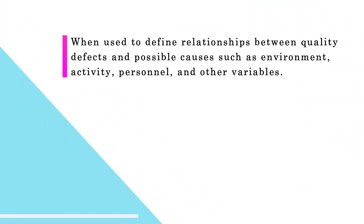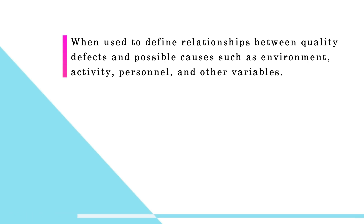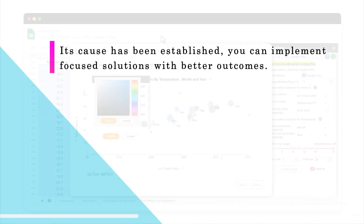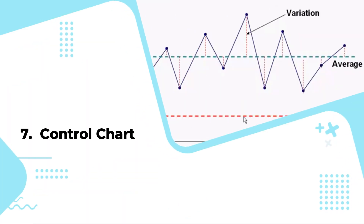Scatter diagrams can prove useful as a quality control tool when used to define relationships between quality defects and possible causes such as environment, activity, personnel, and other variables. Once the relationship between a particular defect and its cause has been established, you can implement focused solutions with better outcomes.